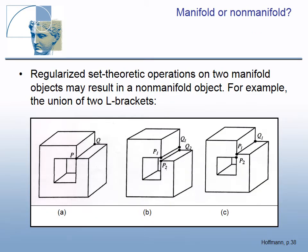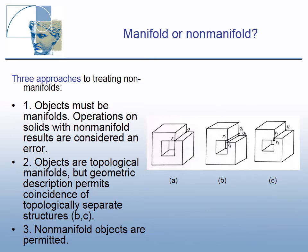Regularized set theoretic operations on two-manifold objects may result in a non-manifold object. For example, the union of two L-brackets shown at the left is non-manifold. There are several ways to treat non-manifolds in modeling systems. The first approach: objects must be manifolds, and operations on solids with non-manifold results are considered an error.